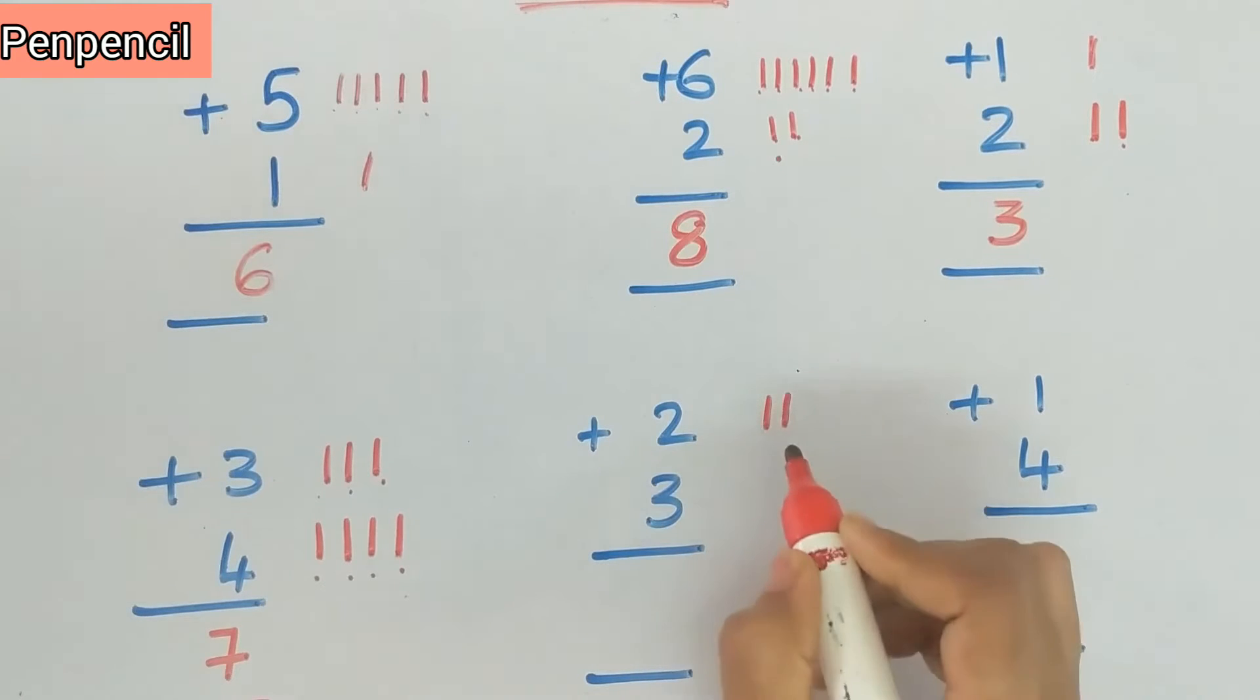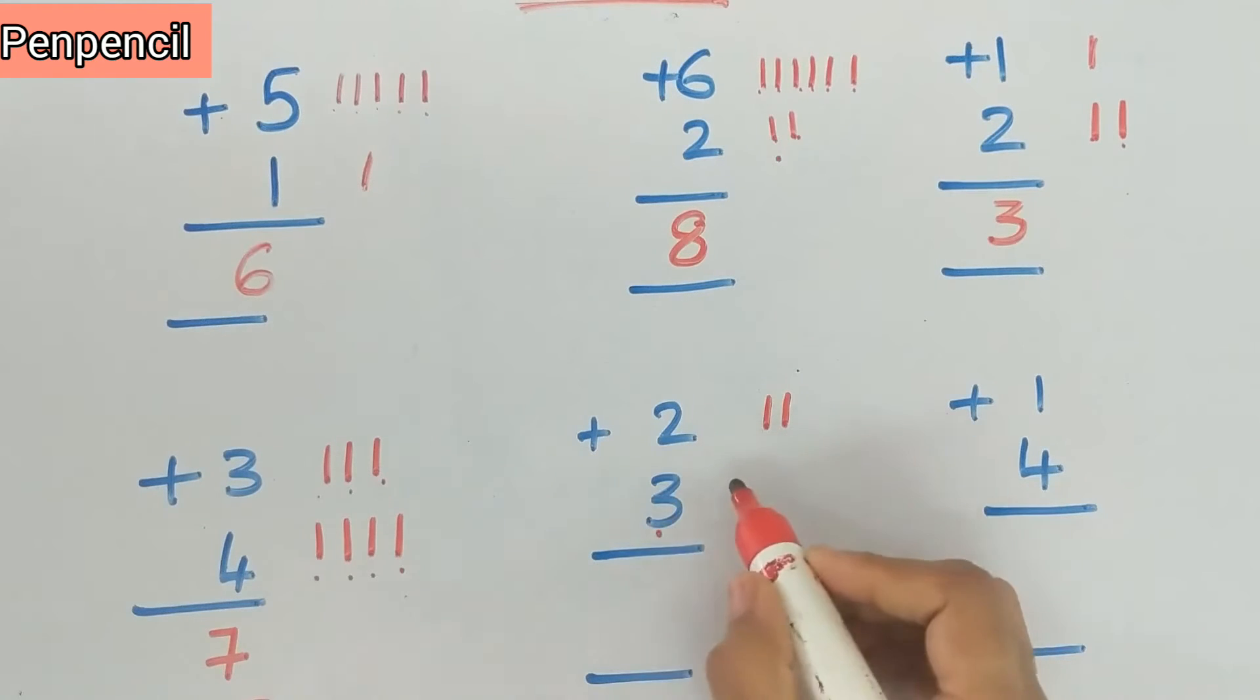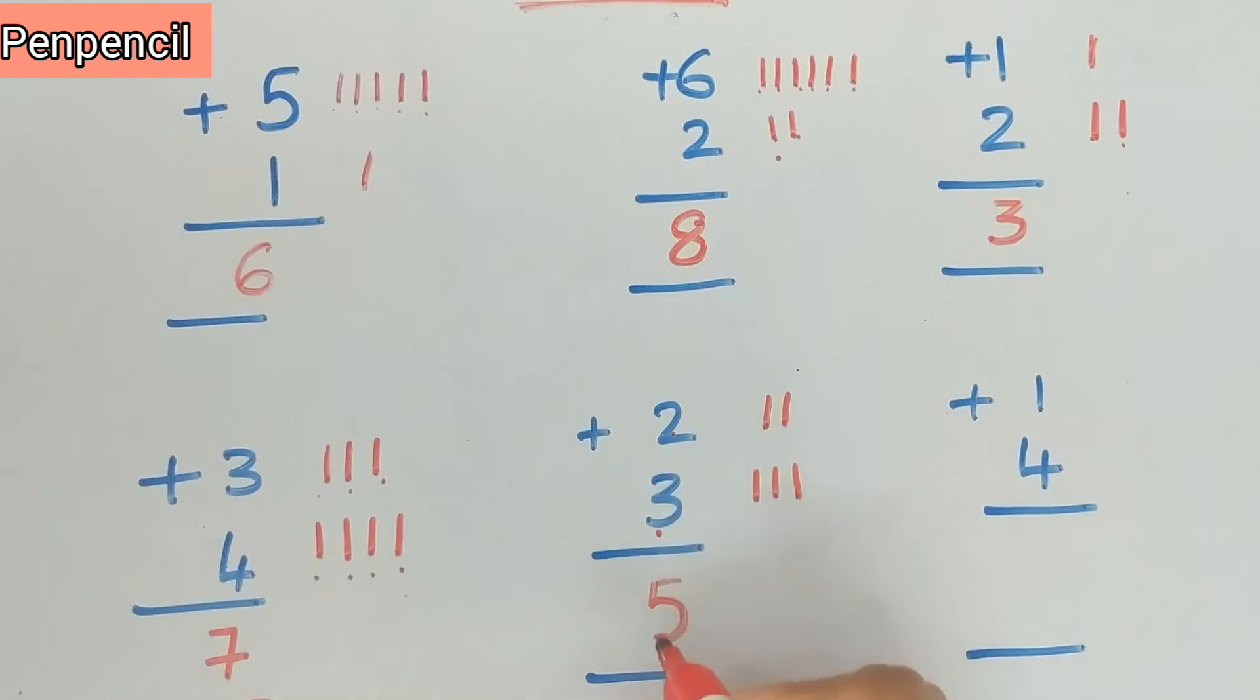Draw 2 lines, then 3 lines. Now count all: 1, 2, 3, 4, 5. Sum is 5. That means 2 plus 3 is 5.